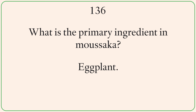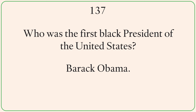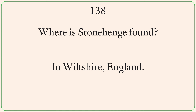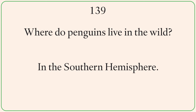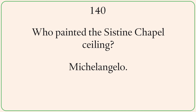What is the primary ingredient in moussaka? Eggplant. Who is the first black president of the United States? Barack Obama. Where is Stonehenge found? In Wiltshire, England. Where do penguins live in the wild? In the Southern Hemisphere.